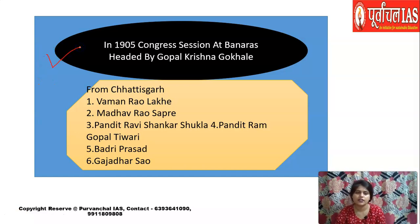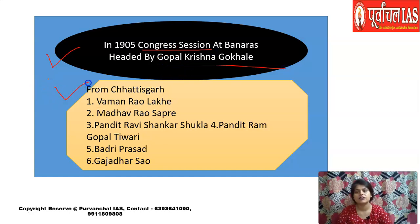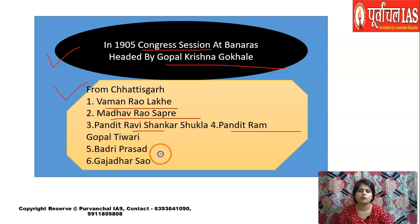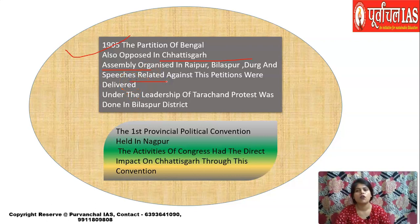On 16th October 1905, Lord Curzon announced the Partition of Bengal, creating huge unrest in India. A Congress session was held at Banaras, headed by Gopal Krishna Gokhale. From Chhattisgarh, participants included Vaman Rao Lakhe, Madhav Rao Sapre, Pandit Ravi Shankar Shukla, Pandit Ram Gopal Tiwari, and Badri Prasad. The Partition of Bengal was opposed all over India, and in Chhattisgarh many assemblies were organized and speeches delivered.